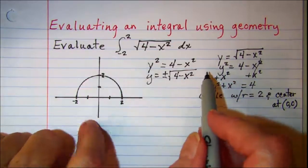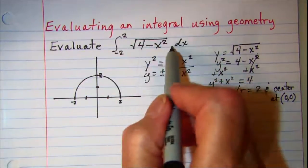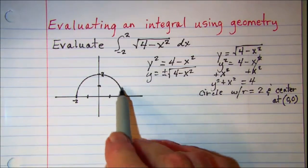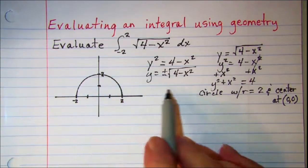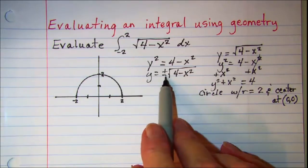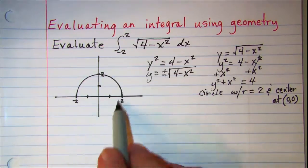So this is actually just the semicircle, the top part of the circle. If we wanted the whole circle we would need the bottom part as well.